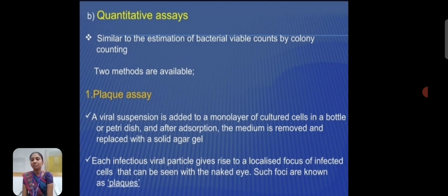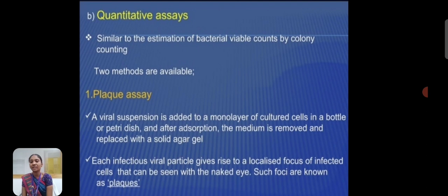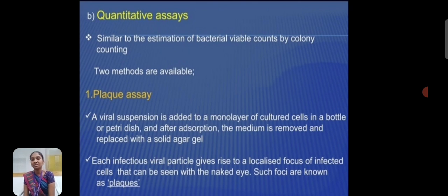Quantitative assay is similar to the estimation of bacterial viable count by colony counting method. Two methods are available. First is the plaque assay: the viral suspension is added to a monolayer of cultured cells in a bottle or petri dish; after adsorption, the media is removed and replaced with solid agar gel. Each infectious viral particle gives rise to a localized focus of infected cells that can be seen with the naked eye — such a focus is known as a plaque. Thanks.